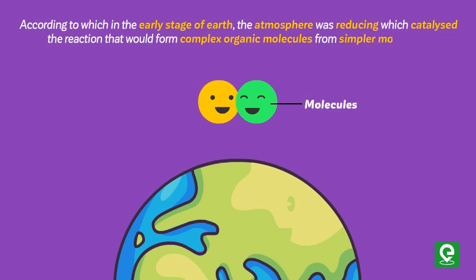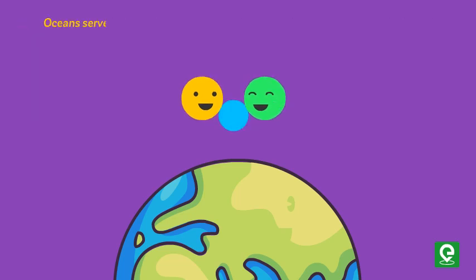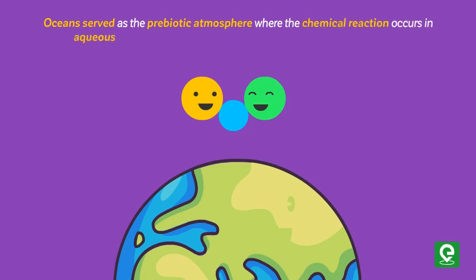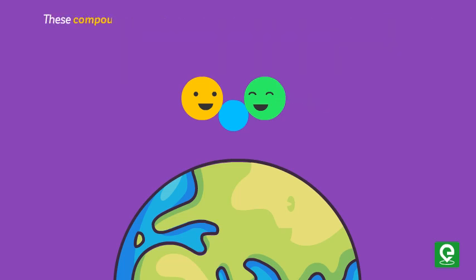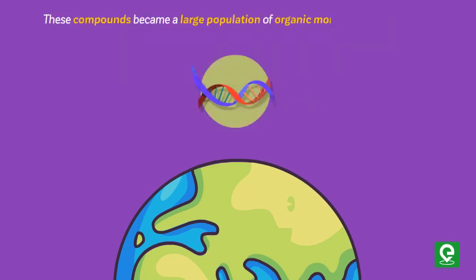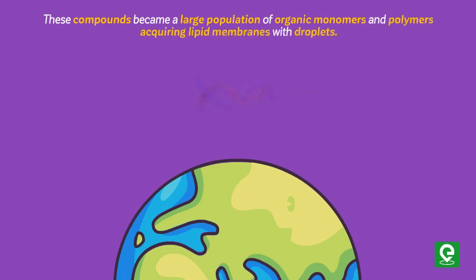Oceans served as a prebiotic environment where chemical reactions occurred in an aqueous environment to form a huge diversity of organic compounds. These compounds became a large population of organic monomers and polymers, acquiring lipid membranes with droplets.